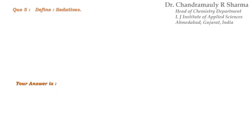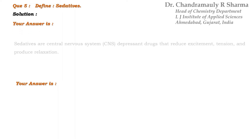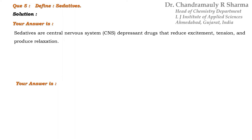The next question is just given on your screen: define sedatives. This is a very easy question so we can write the answer directly. Sedatives are central nervous system depressant drugs that reduce excitement and tension and produce relaxation.